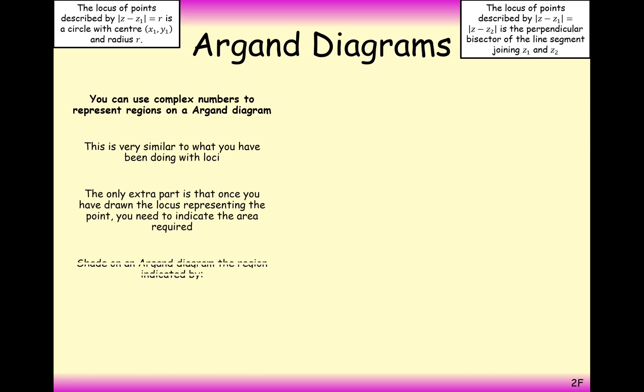Previously what we've seen in loci is a way of plotting a set of coordinates or a set of complex numbers based on a given rule such as this. Now previously we've seen an example where there's an equals sign here. What we're looking for now is the locus of points where the radius is less than 2, or the distance from the point 4, 2 is less than 2.